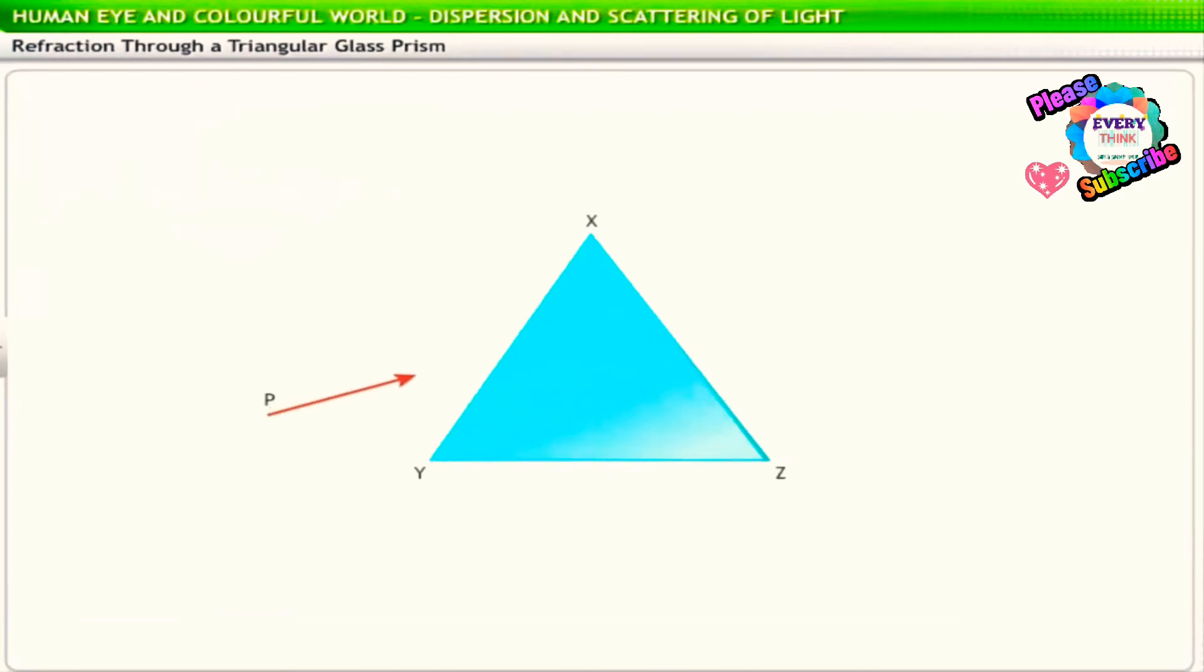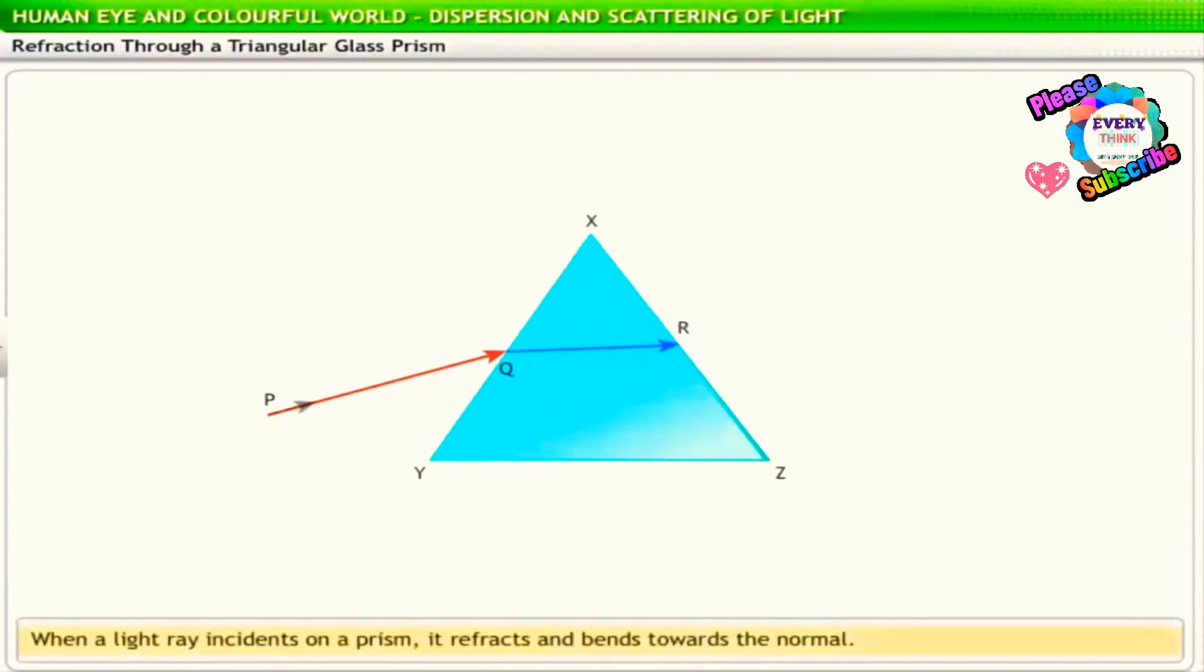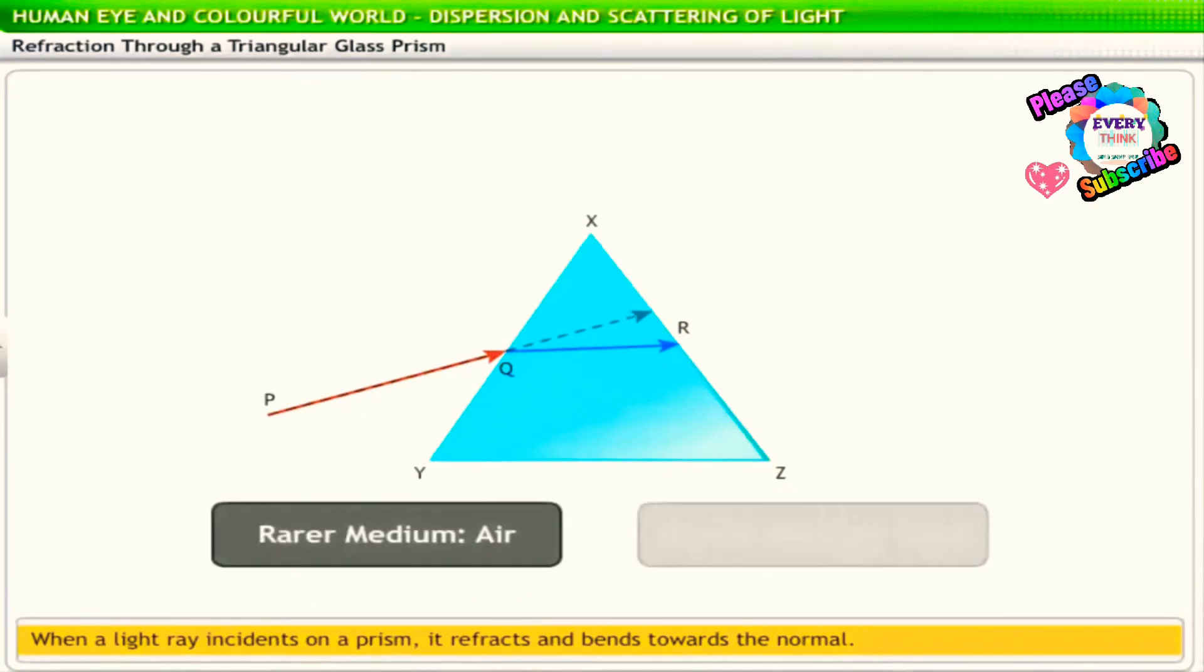When the light ray PQ incidents at Q on the face XY of the cross section XYZ of the prism, it refracts and propagates forward inside the prism. As the light ray passes from a rarer medium, which is air, to a denser medium, which is glass, it bends towards the normal.